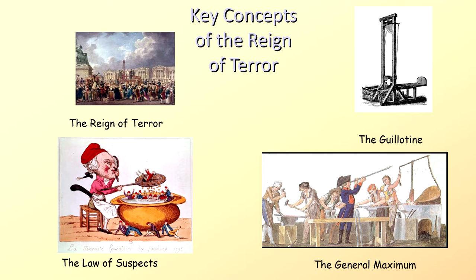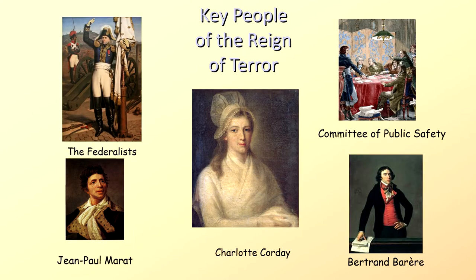Key concepts of the Reign of Terror: the Reign of Terror itself, the Law of Suspects, the General Maximum, and the guillotine. Key people: the Federalists, whom we started discussing last time; Jean-Paul Marat, whom we also started discussing; a new person, Charlotte Corday; and Bertrand Barrère and the Committee of Public Safety.